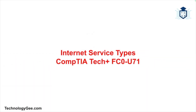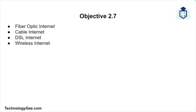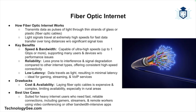What up everybody, this is Tech G back with another video to help you successfully pass the CompTIA Tech+ certification exam. In this video you are going to learn about common internet service types such as fiber optics, cable, digital subscriber line, and wireless options like radio frequency, satellite, and cellular — and how they work, their benefits and drawbacks, and where they are best used.